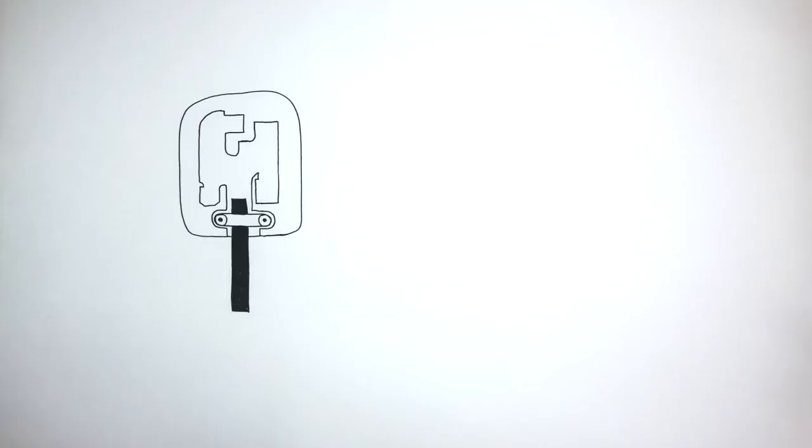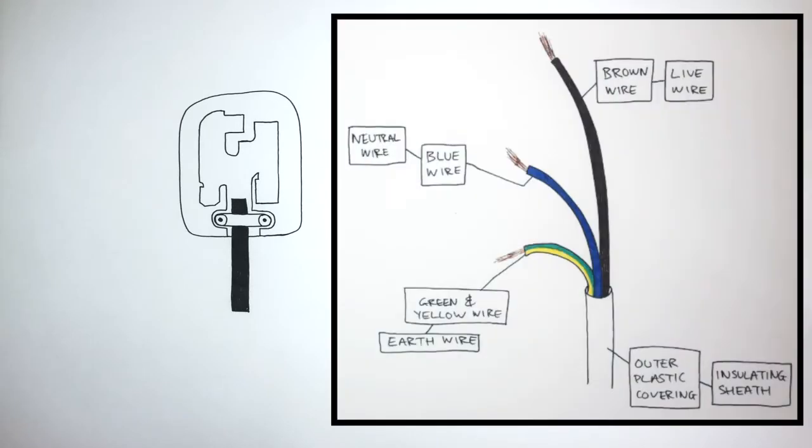We know the three core cable contains three wires. The live wire which is the brown wire, the neutral wire which is the blue wire, and the earth wire which is the green and yellow wire.